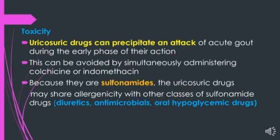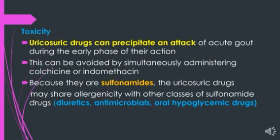The drugs increasing metabolism are urate oxidase, also known as uricase. Uricase metabolizes insoluble uric acid to soluble allantoin. The uricase enzyme is absent in humans, but recombinant urate oxidase is now available as rasburicase. In this way, we have seen the diseases associated with NSAIDs: rheumatoid arthritis and gout.